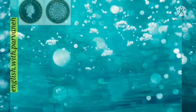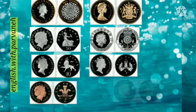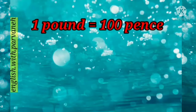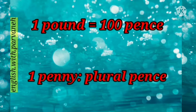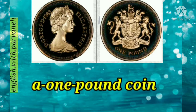Now, coins. First of all, don't forget that one pound is one hundred pence. So one penny — and the plural form is pence. We've got a one pound coin.